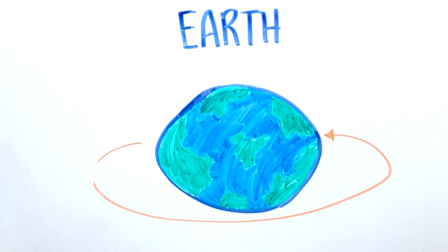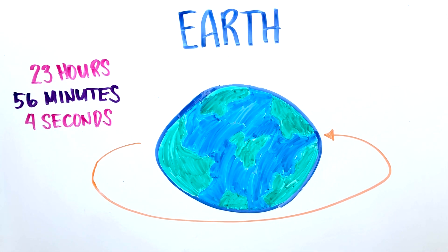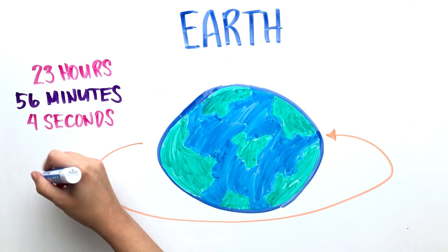But then again, it doesn't take the Earth a full 24 hours to rotate on its own axis. It takes 23 hours, 56 minutes, and 4 seconds. So a day is actually 4 minutes shorter than what we think it is. This is called a sidereal day.